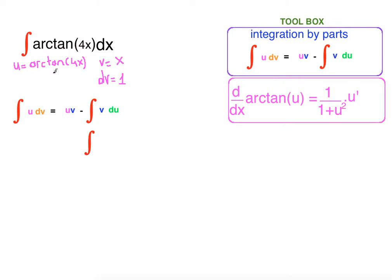So what is the derivative of arctangent of 4x? We can use this formula here. The derivative of arctangent of 4x equals 1 over 1 plus u squared. Here u is our 4x, so what is the square of 4x? 16x squared times u prime. What is u prime? The derivative of 4x, which is 4. So it equals 4 over 1 plus 16x squared.